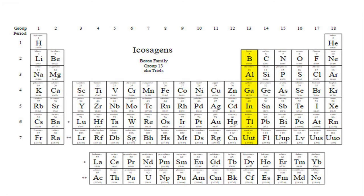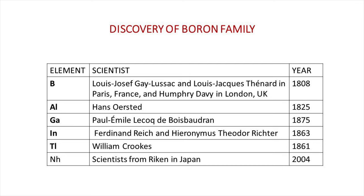Hello, dear students. Today we are going to learn about the Boron Family. Here we discuss some aspects of Group 13 elements, normally called the Boron Family. They form the first family among the p-block elements, where the differentiating electron enters an outermost p orbital. Elements in the boron group include boron, aluminium, gallium, indium, thallium, and nihonium.